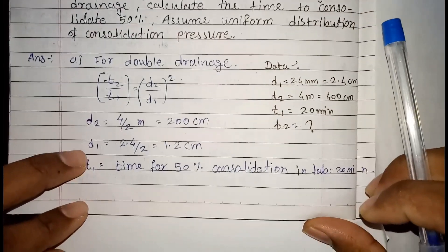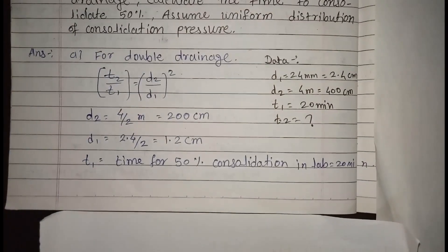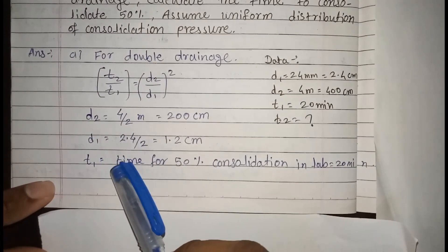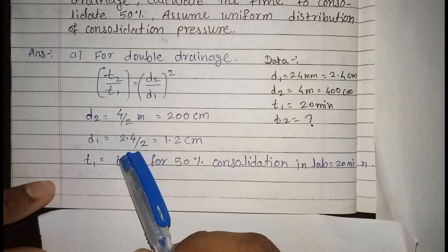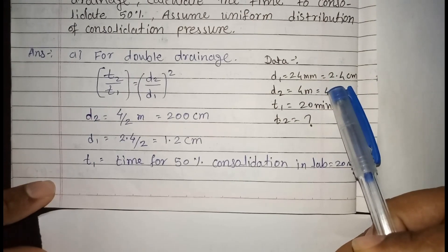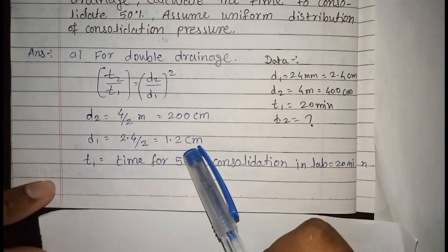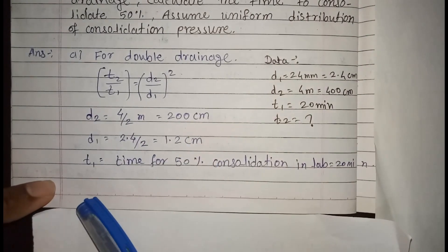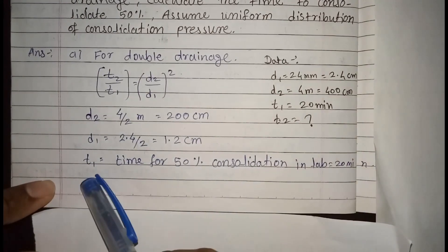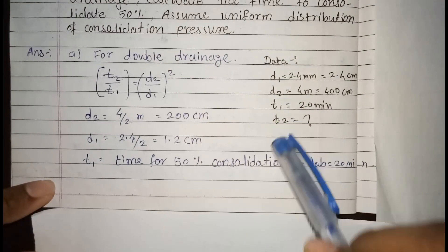D1 is the drainage path in the laboratory. The thickness of the lab sample is 24 mm, equal to 2.4 cm. Since drainage condition is double drainage, 2.4 divided by 2 equals 1.2 cm. T1, the time required for 50% consolidation in the lab, is 20 minutes. We now calculate T2, the time for 50% consolidation in the field.